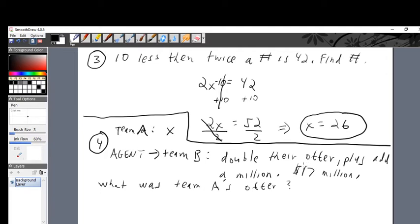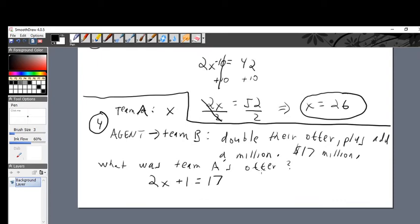We know what they want from team B. What was team A's offer? Well, it says over here, double their offer. Their offer, we already know we should call it X. It was some unknown number. So double their offer, that's 2X, plus add another million, plus one. And that's going to be equal to what he spells out. Eventually the agent spells out, we want exactly 17 million. So there's the linear equation that we've got to figure out.